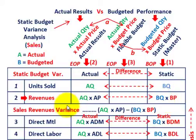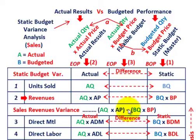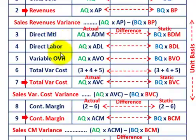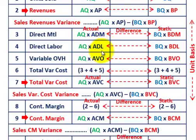Our sales revenue variance is simply actual quantity times actual price compared to budgeted quantity times budgeted price — that difference is the variance. For direct materials, direct labor, and variable overhead, we take actual quantities times actual unit costs for each, and compare to the static budget of budgeted quantities times budgeted costs on a per-unit basis for materials, labor, and overhead.